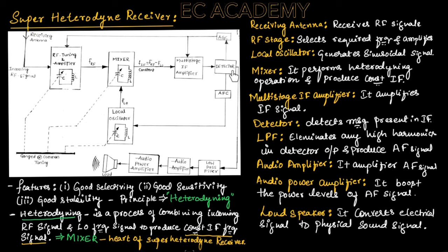The detector detects the message signal present in the IF signal. Then the low-pass filter eliminates any high harmonics that are present in the detected output, and it produces the required audio frequencies.